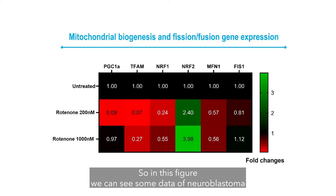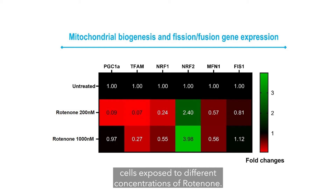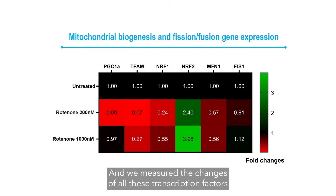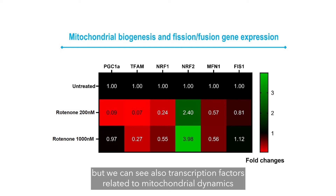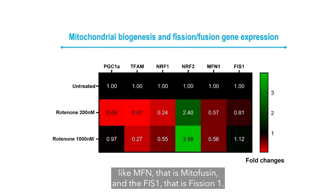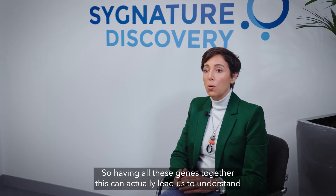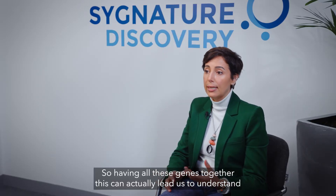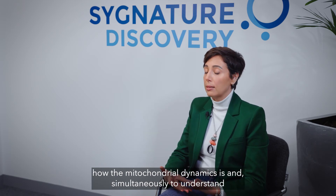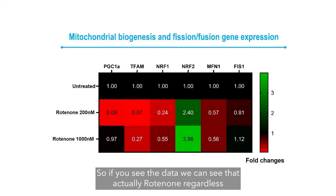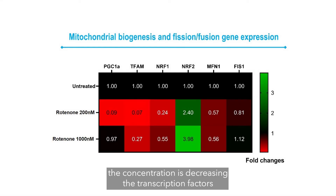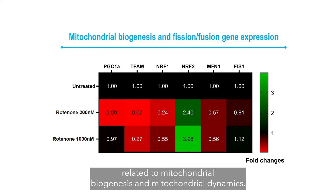In this figure, we can see data from neuroblastoma cells exposed to different concentrations of rotenone, where we measured changes in all these transcription factors using RT-PCR. We can see PGC1-alpha and TIFAM, as well as transcription factors related to mitochondrial dynamics such as MFN1. Having all these genes together allows us to understand mitochondrial dynamics and simultaneously understand how mitochondria are increasing their number in a specific model. The data shows that rotenone, regardless of concentration, decreases transcription factors related to mitochondrial biogenesis and mitochondrial dynamics.